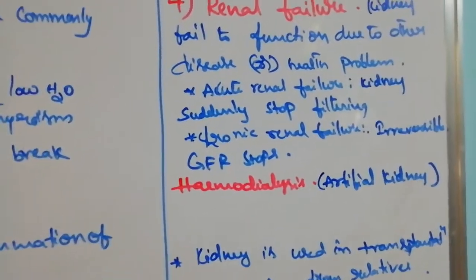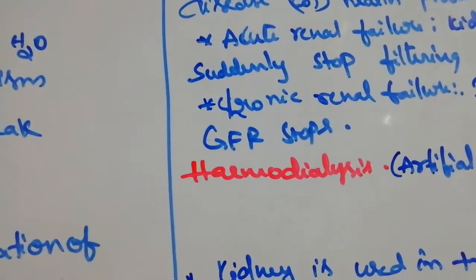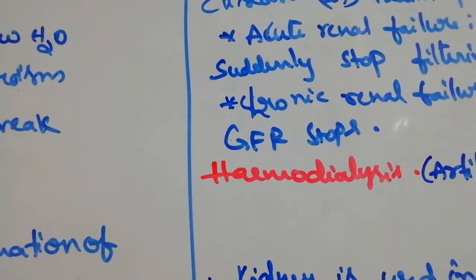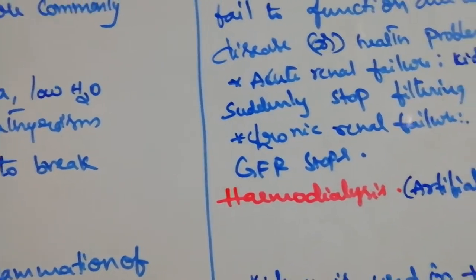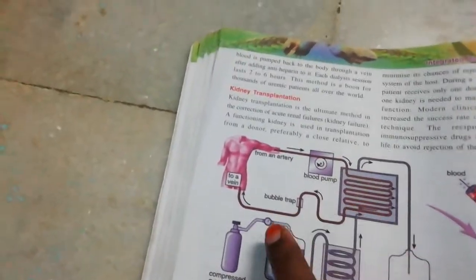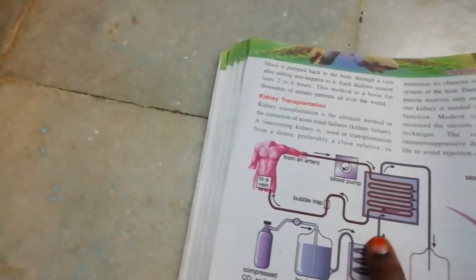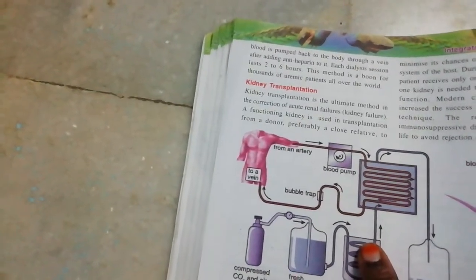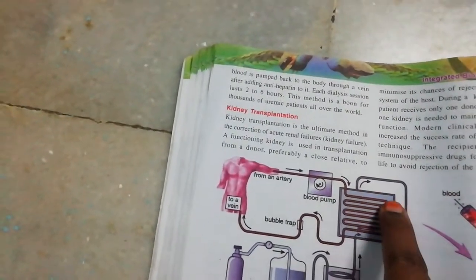In uremia, urea is present in the blood and causes toxic effects. We remove that urea by hemodialysis. In hemodialysis, blood is collected from one vein and sent to a chamber containing fluid similar to plasma, except urea is absent. The chamber is made of cellophane and filled with a plasma-like composition except urea is absent. Since urea is not present in the fluid, the urea from the blood enters into this fluid.